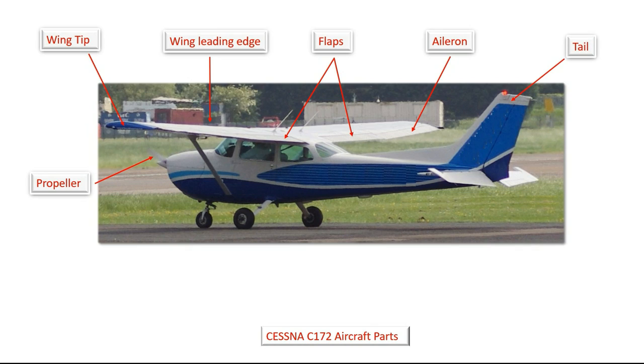At the back we've got the tail plane. This part of the aircraft is a stabilising part and it helps the aircraft keep stable in straight and level flight.